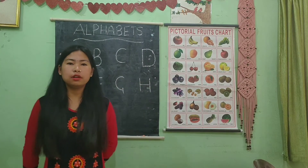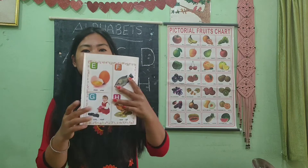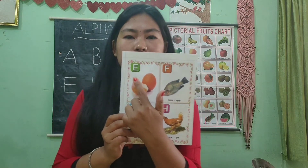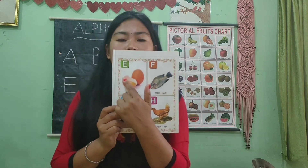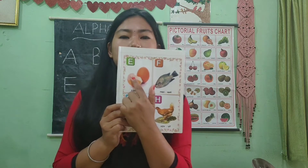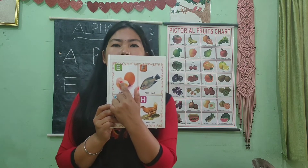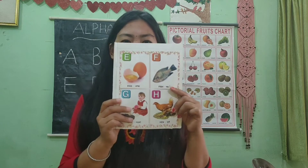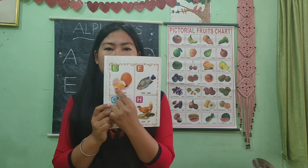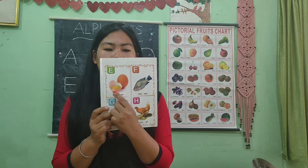Now, we will learn further. What is this, children? E. Say E. E for egg. E for egg. Very good. And E for elephant. Okay? E for egg. E for elephant. Very good.